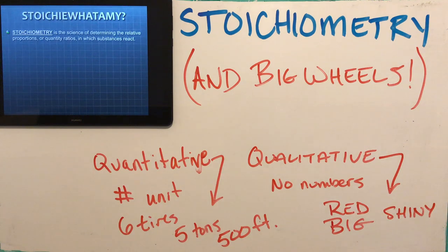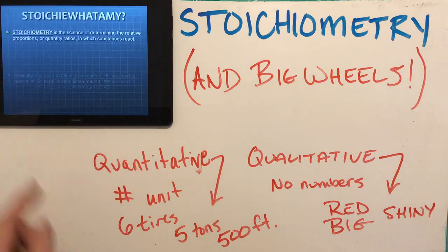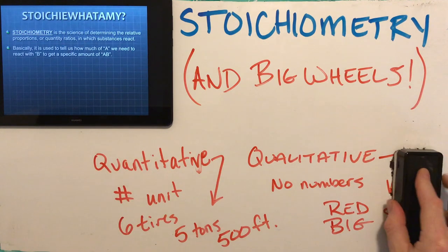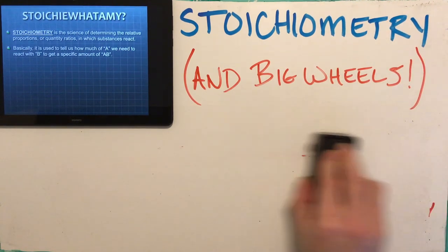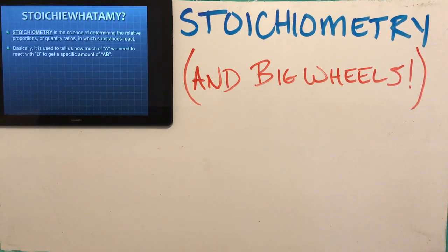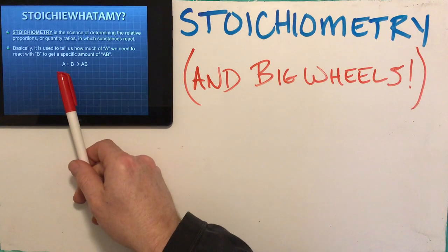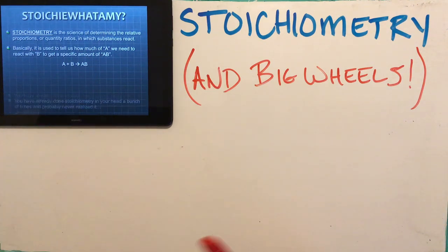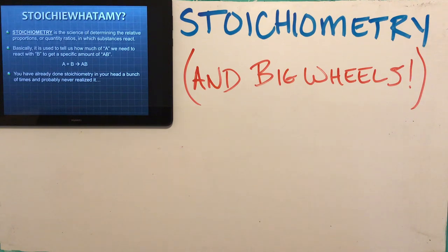So what we're looking at in stoichiometry are the numerical relationships between substances undergoing a chemical reaction and the products they form. Basically, it's telling us how much of A do we need to react with a certain amount of B to produce a specific amount of AB. You've already done stoichiometry in your head a bunch of times — you just haven't realized it yet.